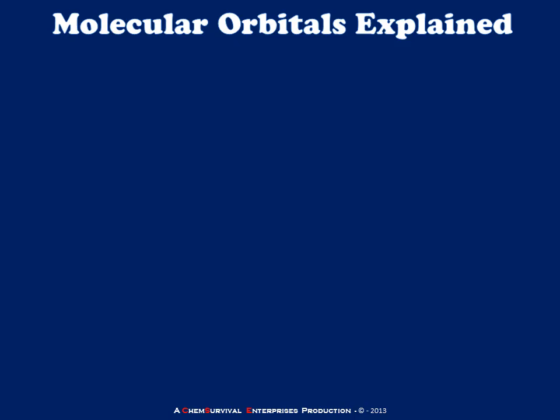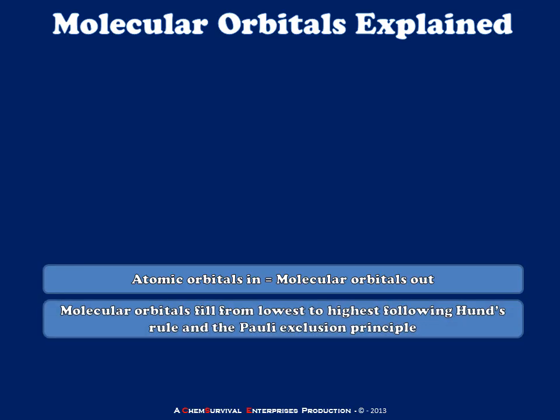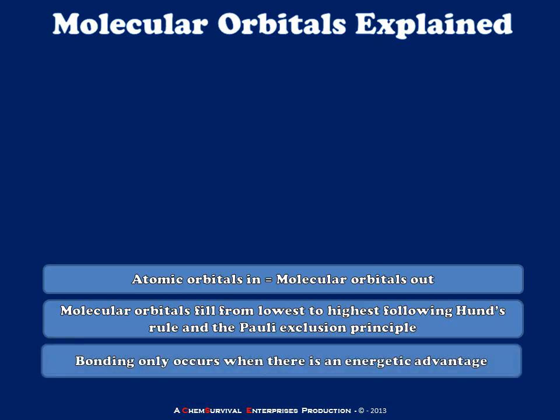When we work with molecular orbitals, we need to keep a few rules in mind. The first is that the number of atomic orbitals which go into the system is equal to the number of molecular orbitals which are formed. The second rule: molecular orbitals fill from lowest to highest energy following Hund's rule and the Pauli exclusion principle. And finally, bonding between any two atoms will only occur when there is an energetic advantage to populating the molecular orbital system compared to the atomic orbital system. Now that we have a rough understanding of what molecular orbitals are and the rules we need to follow, let's take a look at some specific simple molecules.